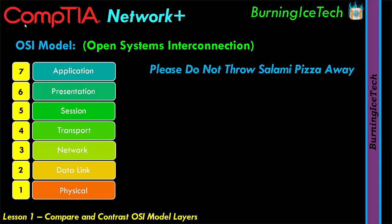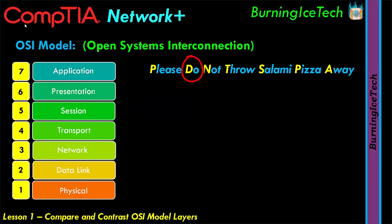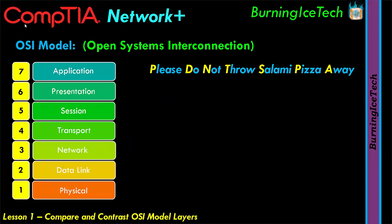The easy way to memorize the OSI model layers is to use a mnemonic: 'Please Do Not Throw Salami Pizza Away.' The first letter of each word corresponds to the first letter of each layer. For example, 'P' corresponds to the physical layer at layer one, 'D' corresponds to the data link layer at layer two, and so on. There are many mnemonics online you can use to help remember the seven layers and their order.